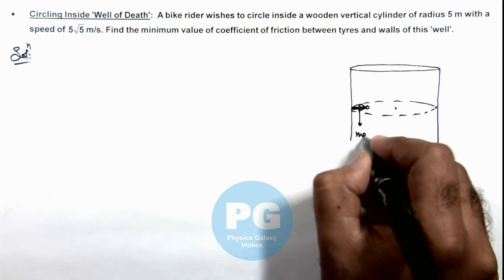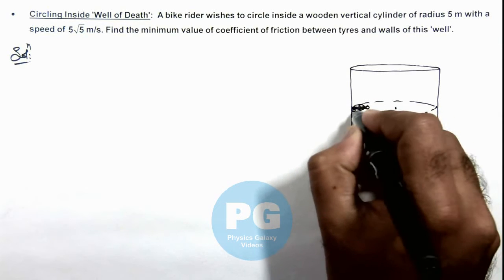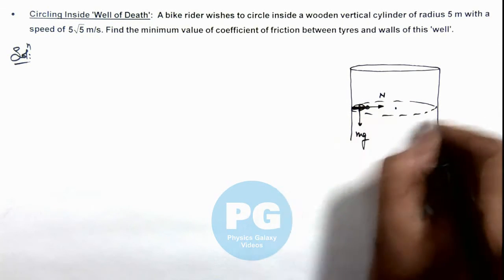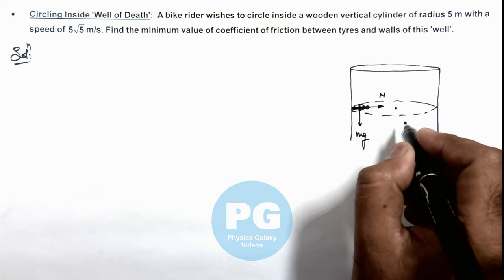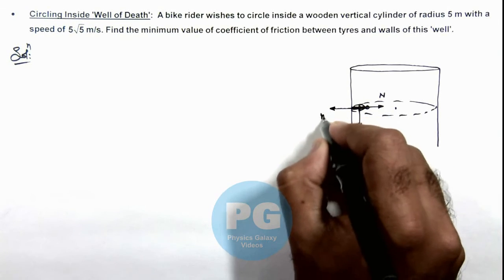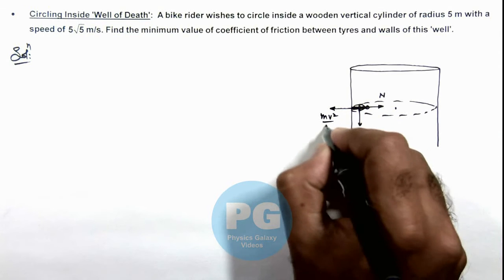So he'll be experiencing his weight in downward direction, and normal reaction would be acting inward which is providing the centripetal force for circular motion. In rotating frame we can consider it is experiencing a centrifugal force m v square by r outward.